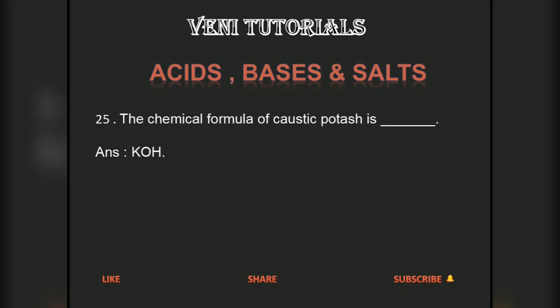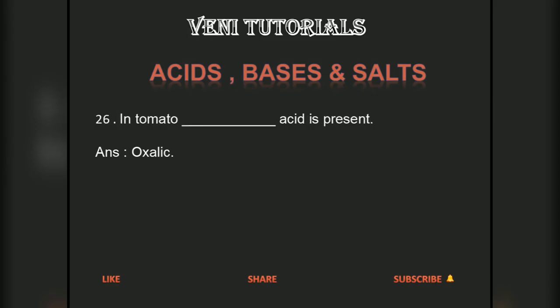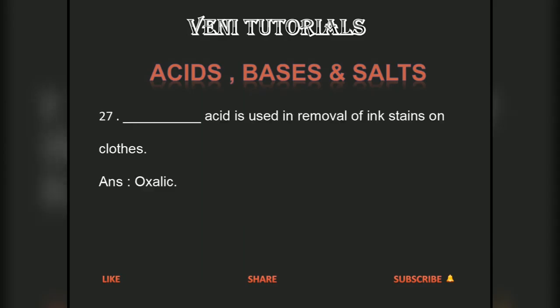The chemical formula of caustic potash is KOH. In tomato, oxalic acid is present. Oxalic acid is used in removal of ink stains on clothes.